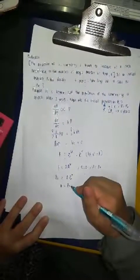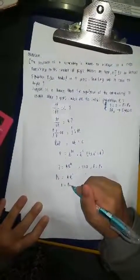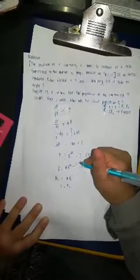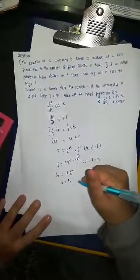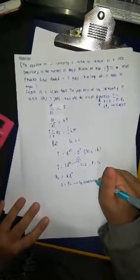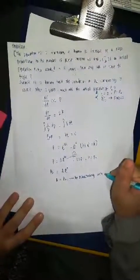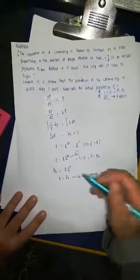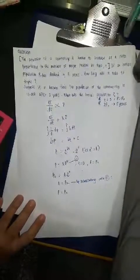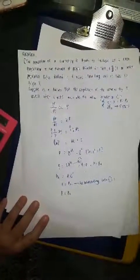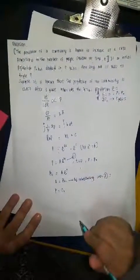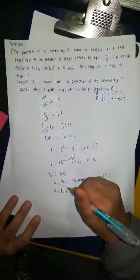By substituting this into the previous equation, which is this, by substituting into equation 1, we will get P is equal to P₀ e to the power of KT.